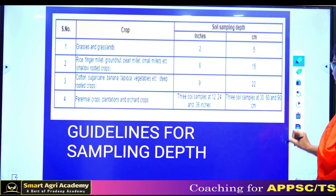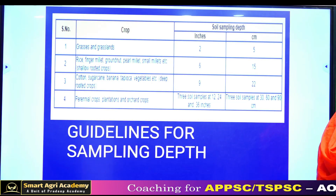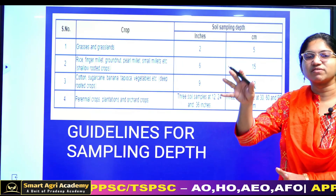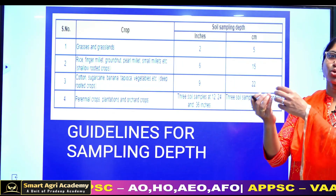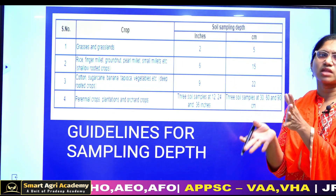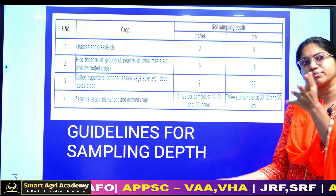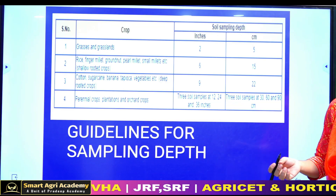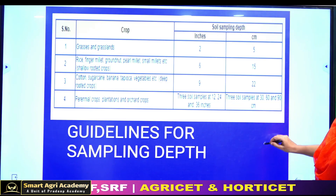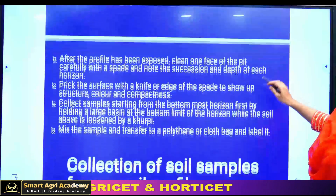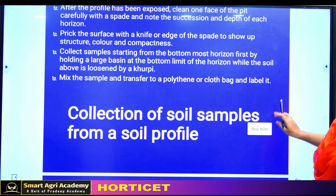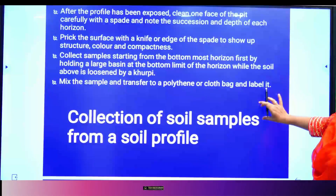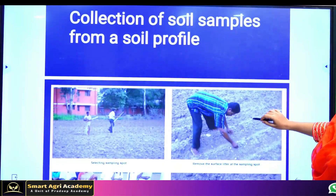This depth is very important. For shallow roots, we take shallow-depth samples. The collection of soil samples using this approach is called the quartering method.